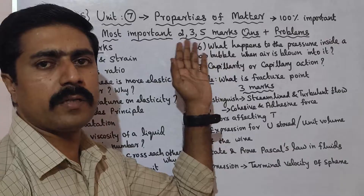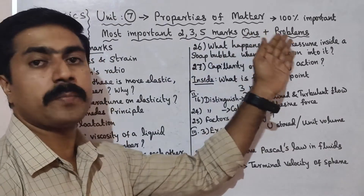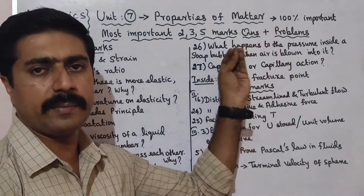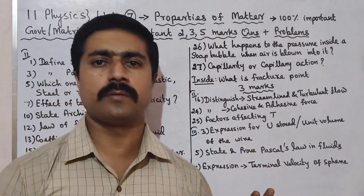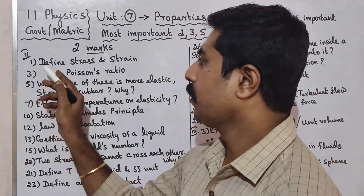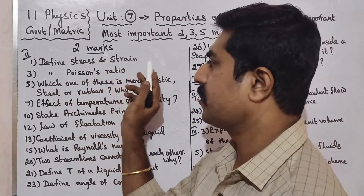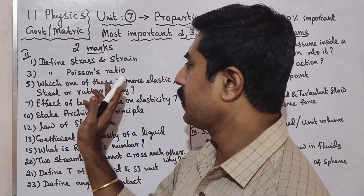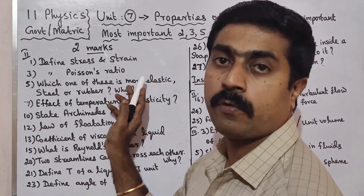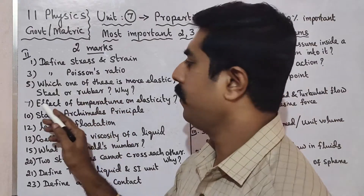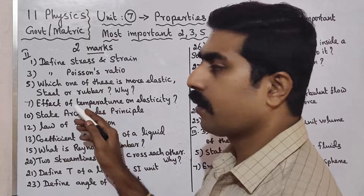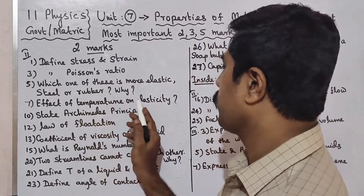Most important 2-mark, 3-mark and 5-mark questions plus important problems. In Unit 7, Properties of Matter, 100% important questions: 2-marks — Define Stress; Define Poisson's Ratio; Which one is more elastic, steel or rubber? Why? What is the effect of temperature on elasticity?